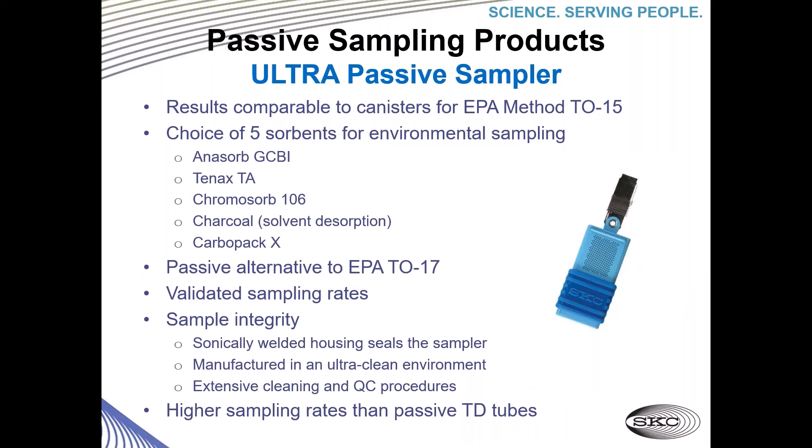The last sampler I want to highlight is the Ultra Passive Sampler. Lab results for the Ultra are comparable to canisters for EPA method TO-15, yet there are no cleaning and certification costs. The price is significantly lower, and because of the size and weight, there are no expensive shipping costs either. You have a choice of five sorbents for environmental sampling, providing a nice passive sampling alternative for EPA TO-17, with no pump, tubing, or calibration required. These samplers are sonically welded and manufactured in an ultra-clean environment to protect sample integrity. The Ultra also boasts higher sampling rates than passive thermal desorption tubes.